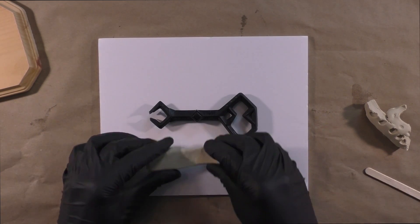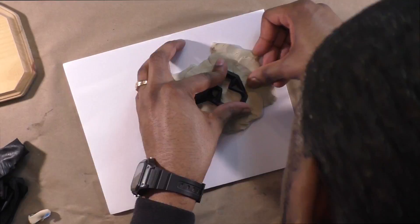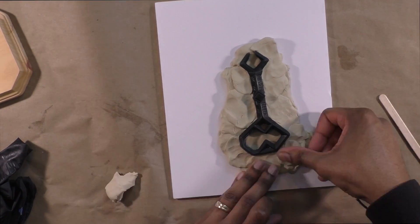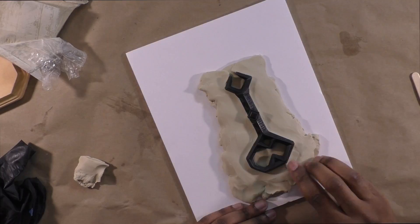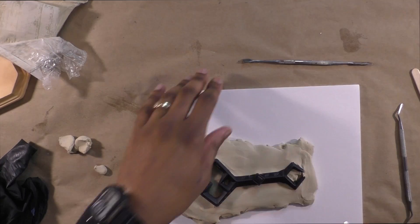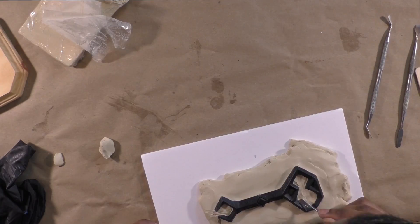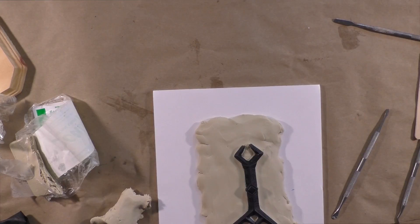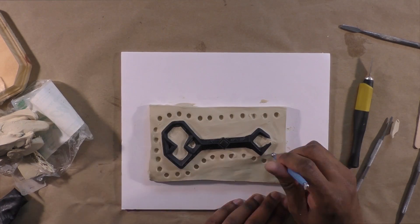All right, time to begin this two-part mold process. I had some foam boards, so I decided to use that as my surface. Here I am using oil-based clay in order to build up my surface to the halfway point of the key. I utilized sculpting tools to help get into the smaller areas and to help get a nice flat surface.